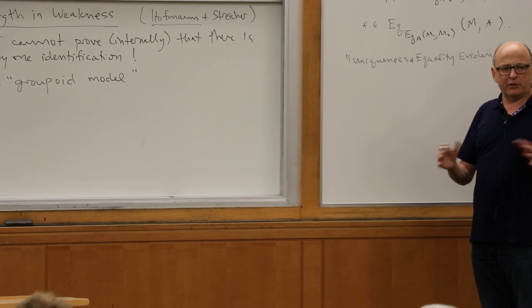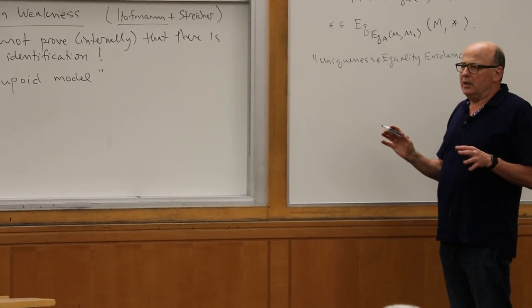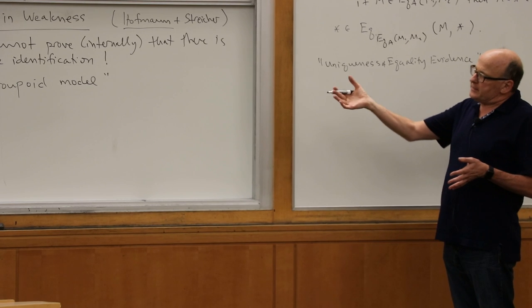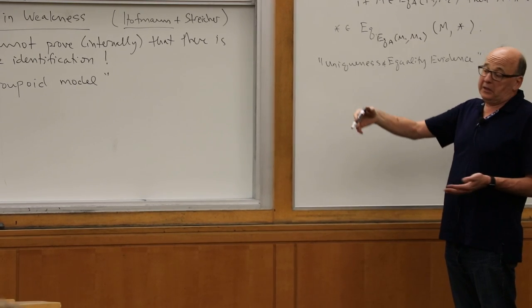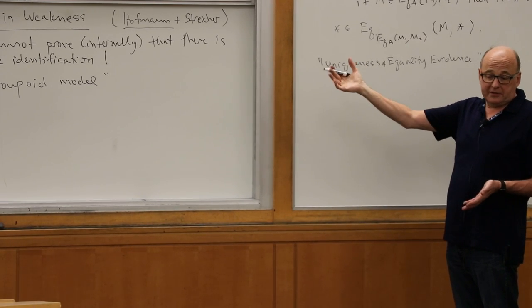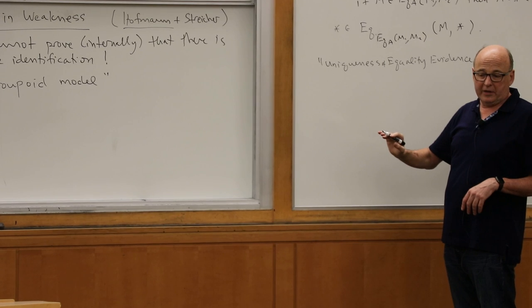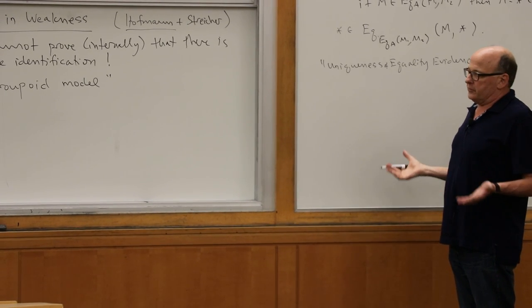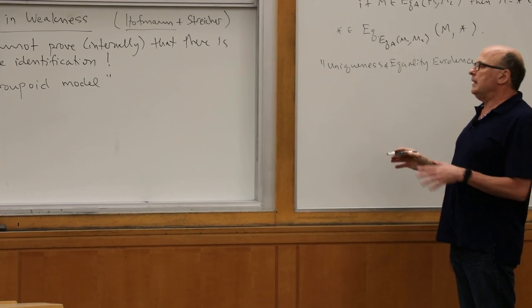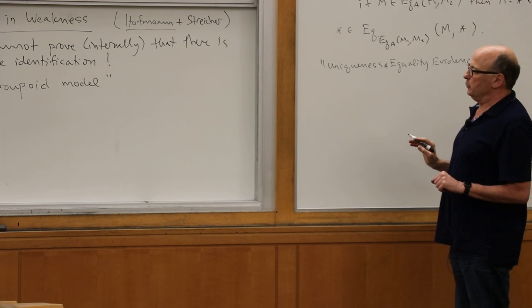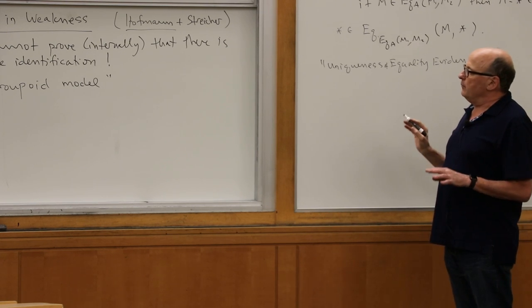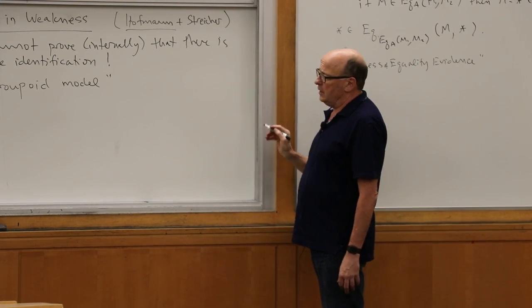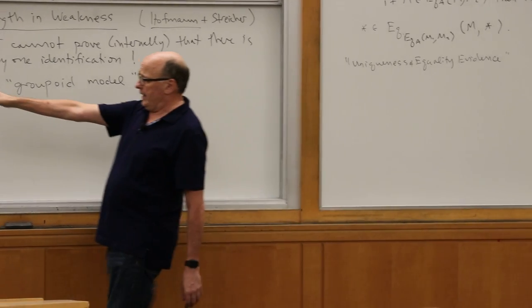A groupoid can be thought of as an equivalence relation with evidence — a generalized group. This id type is a binary relation with evidence. You can prove it's an equivalence relation. They interpret it as a groupoid, and by showing that, they show you cannot refute uniqueness. So it's not so bad — semantically, in some sense, it's okay.